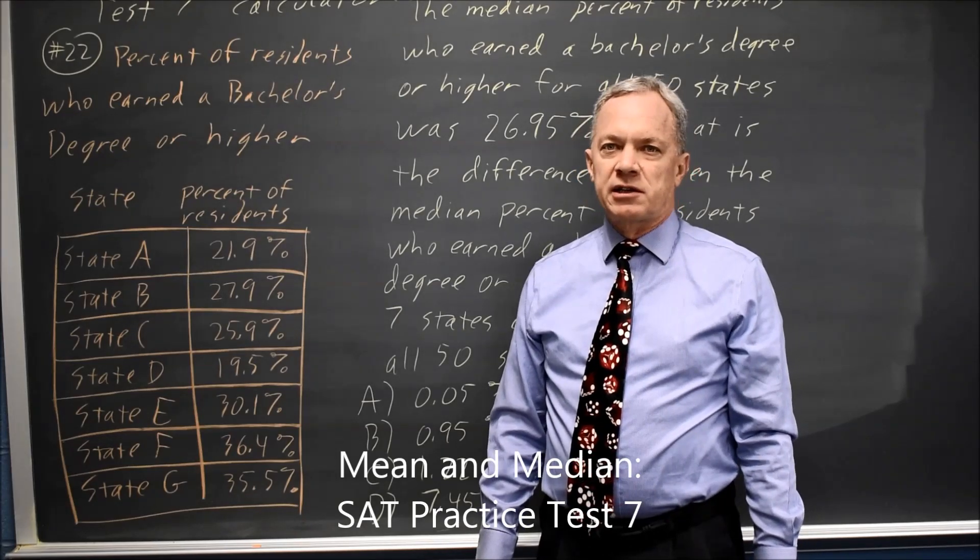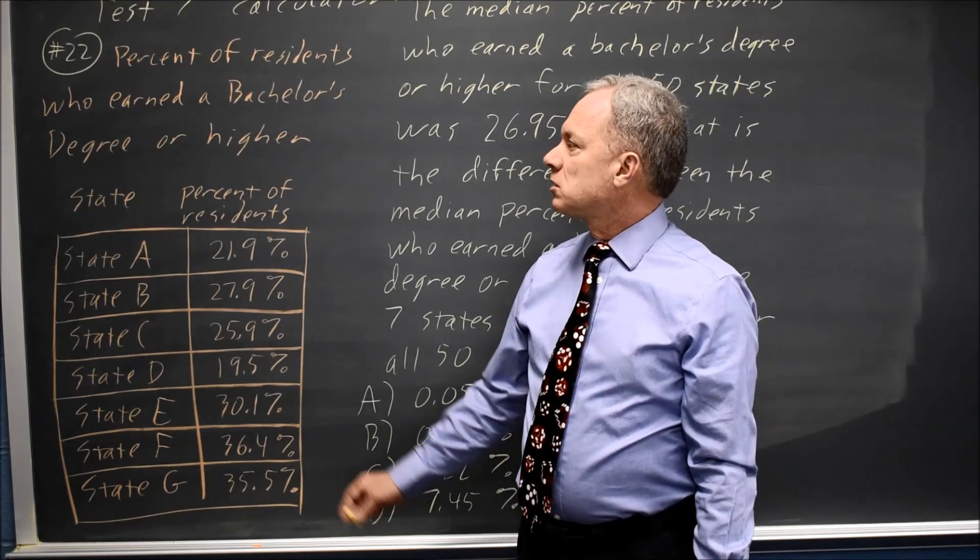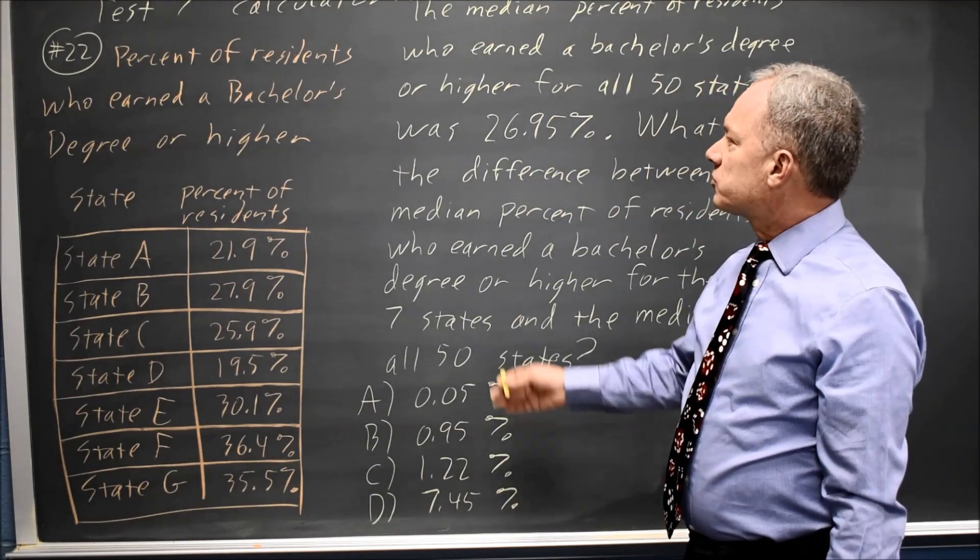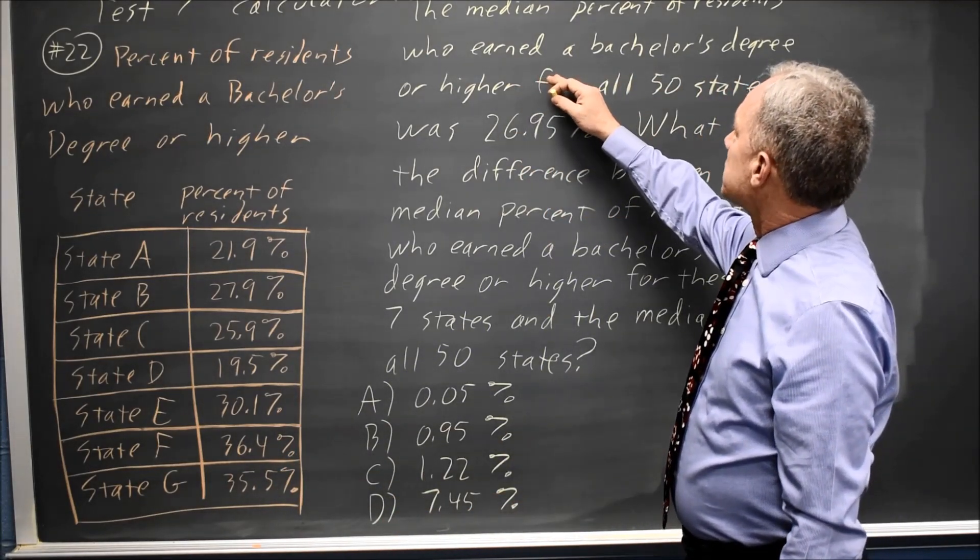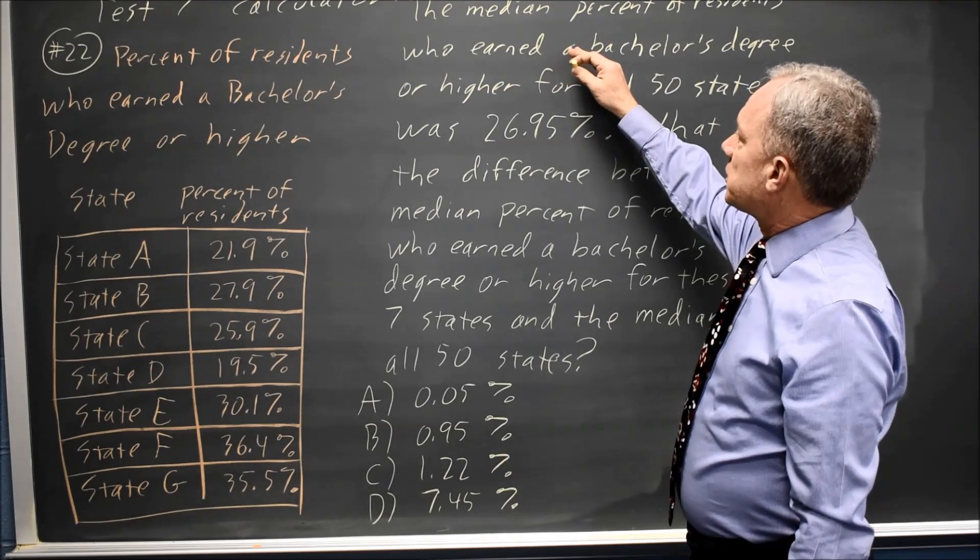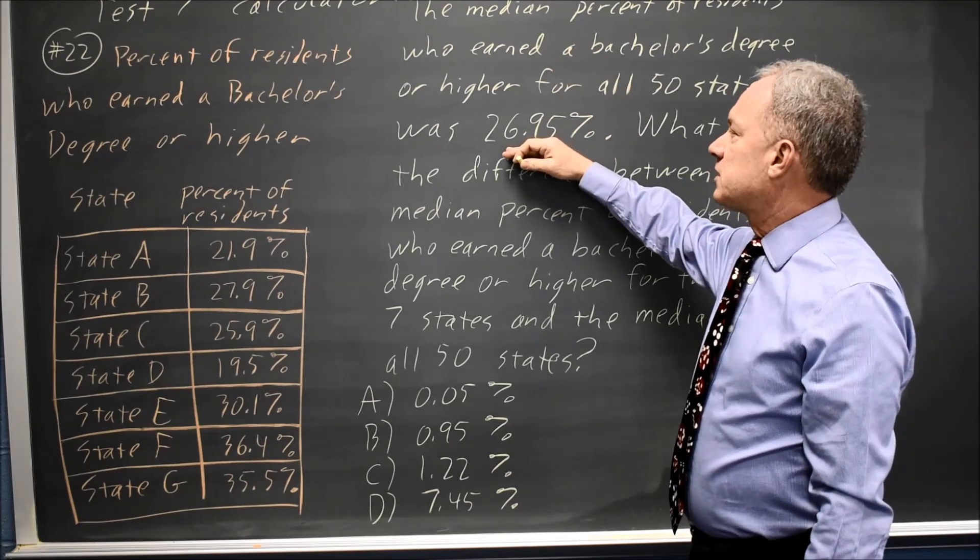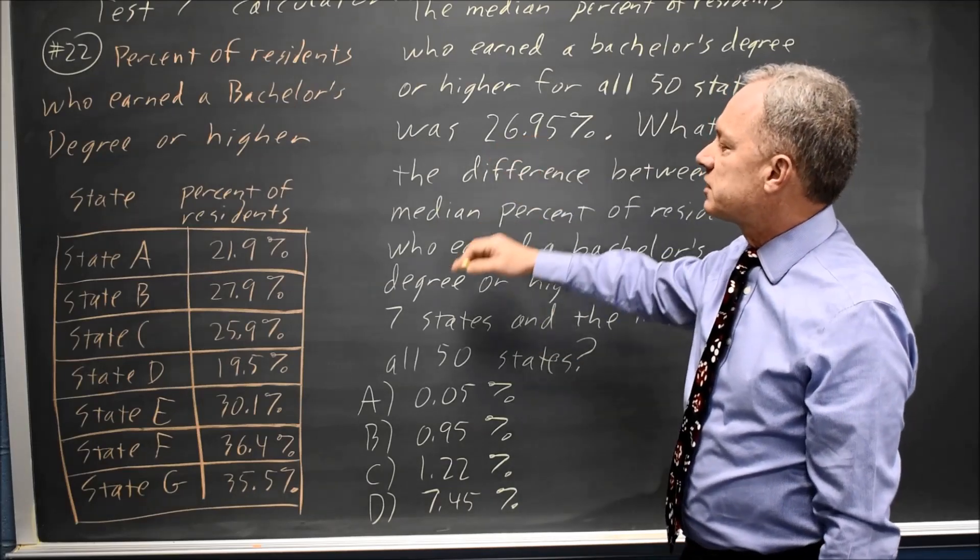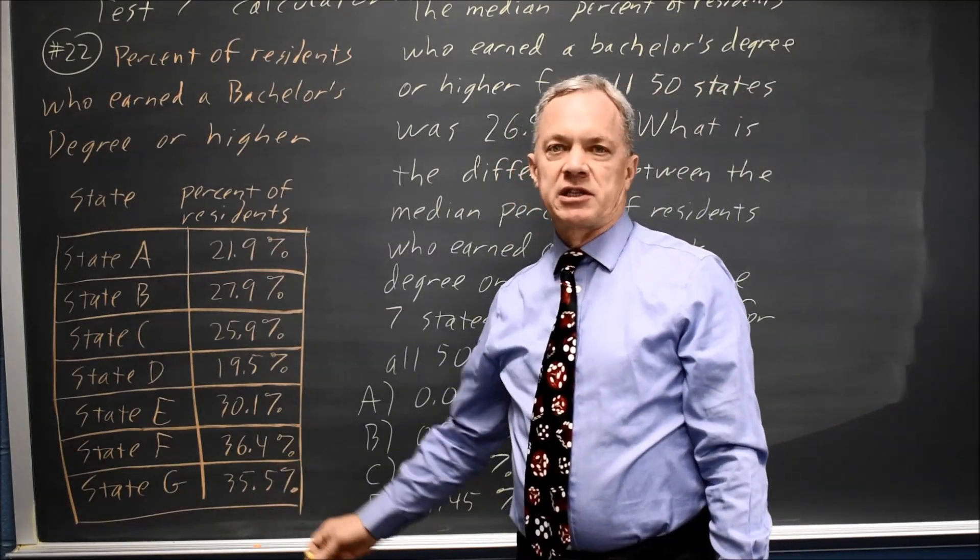This is SAT Test 7, Calculator Question Number 22. College Board gives you a table of values from a survey and tells you the median percent for all 50 states is 26.95. They ask for the difference between the median for all 50 states and the median for these 7 states.